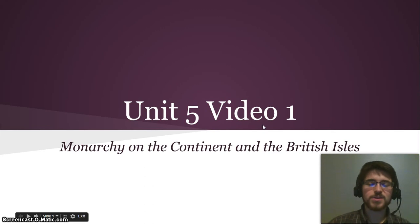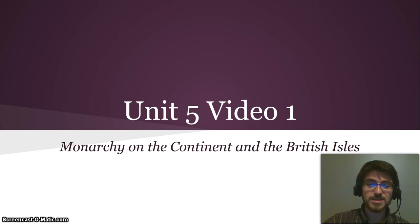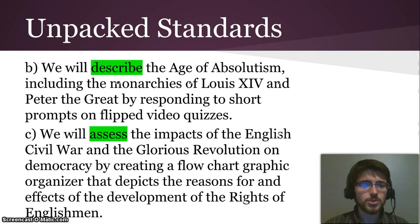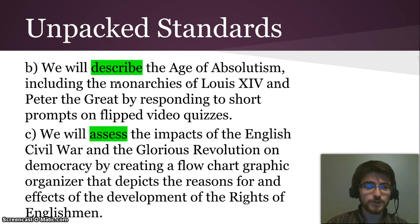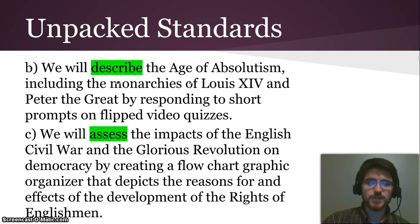Hello and welcome to this first video in a series where we cover a whole bunch of stuff. In this video we're going to be covering the monarchy on the continent of Europe and in the British Isles. We will describe the age of absolutism including the monarchies of Louis the 14th and Peter the Great, and we will assess the impacts of the English Civil War and Glorious Revolution on democracy by creating a flow chart graphic organizer depicting the development of the rights of Englishmen.